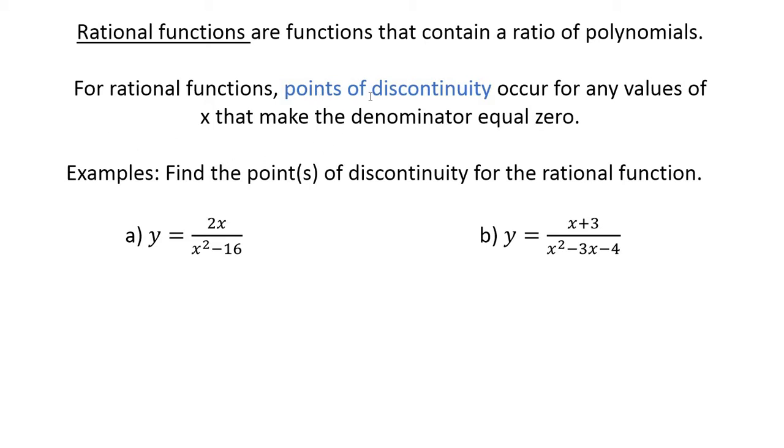For rational functions, points of discontinuity occur for any values of x that make the denominator equal zero. Of course we know we cannot divide by zero, it just doesn't work. In a rational function, anything that makes that denominator zero is a point of discontinuity. If you think about making a graph, if you had to pick your pencil up, or your pen, however you're sketching it, then that's a discontinuity.